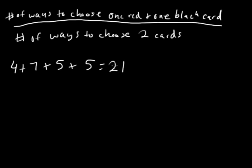Okay, so you already know that the bottom half of your probability problem is going to be C(21,2). You're choosing two out of 21 cards. What we need to figure out is the top.